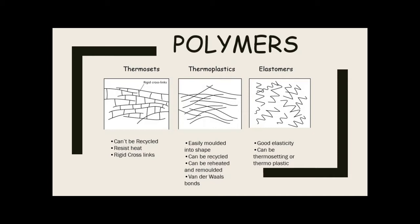Thermosetting plastics cannot be recycled — they're very heat resistant. At a molecular level, you've got polymer fibers going across with rigid cross-links between them called van der Waals bonds. Once set in place, they become rigid and prevent recycling. If you try to reheat them, they just form a clumpy mess and become useless.